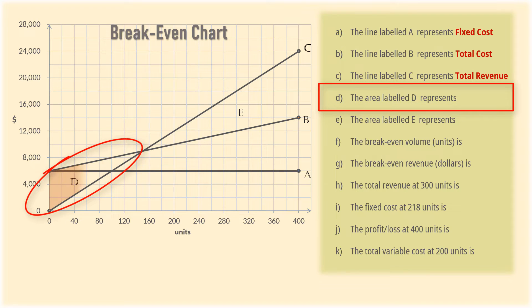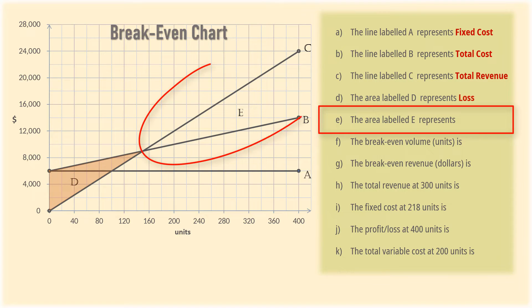In region D here, total cost is greater than total revenue, so this region represents loss. And in E, total revenue is greater than total cost, so E represents profit.